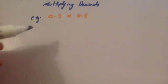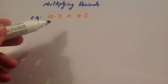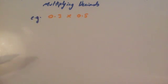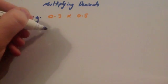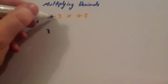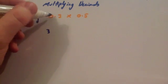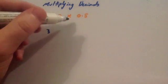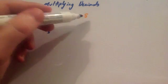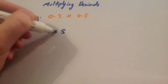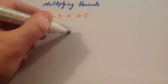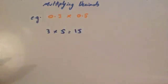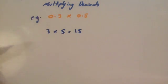Let's have a look at this example. We are going to do 0.3 multiplied by 0.5. Step one is ignore the decimal points. So 0.3 is just 3 and 0.5 is just 5. So then you do 3 times 5, which is 15. So step one is to ignore the decimal points and just multiply the numbers.